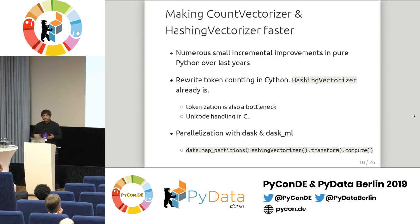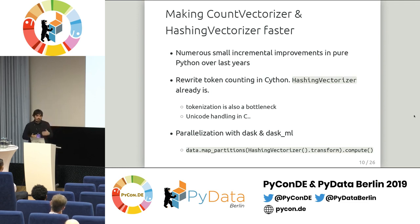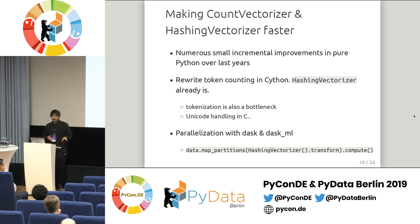I've been looking at how to make those two classes faster, because this is often a bottleneck — you have a large document collection, you want to apply a linear model, and just extracting tokens can take a while. There have been many small incremental contributions in scikit-learn to tune performance over the last several years, but the performance hasn't reached its maximum. You could rewrite token counting in scikit-learn — this is already done for HashingVectorizer — but unfortunately it doesn't improve performance that much because part of the pipeline is still in pure Python. Also, handling Unicode in C is not something I'd enjoy, and tokenization using the Python regex library is another bottleneck that's hard to address.